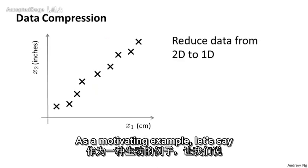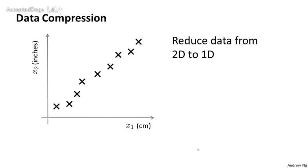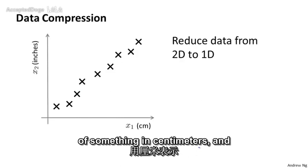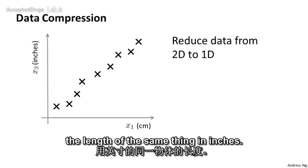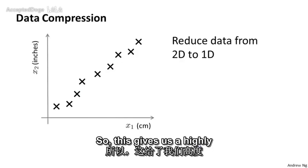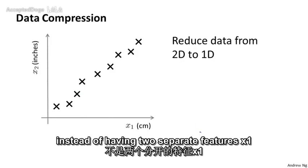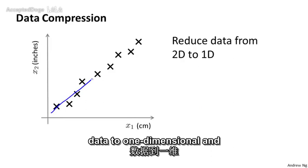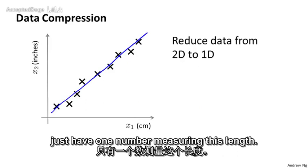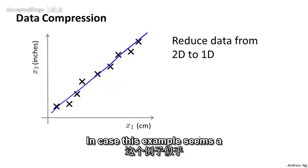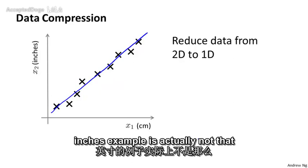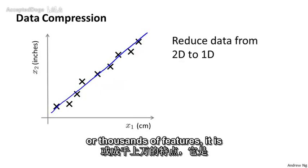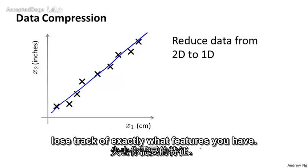As a motivating example, let's say that we've collected a data set with many features, and I've plotted just two of them here. Two of the features were actually the length of something in centimeters, and a different feature, x2, is the length of the same thing in inches. This gives us a highly redundant representation. Maybe instead of having two separate features, x1 and x2, both of which basically measure the length, we want to reduce the data to one dimensional and just have one number measuring this length. If you have hundreds or thousands of features, it's often easy to lose track of exactly what features you have.